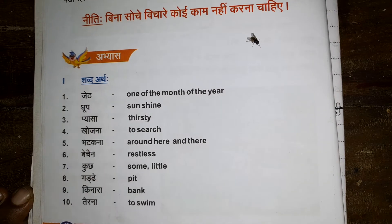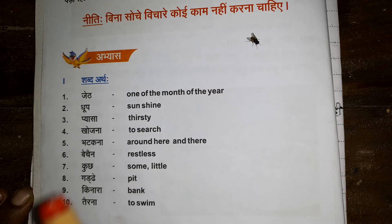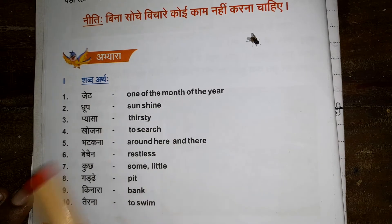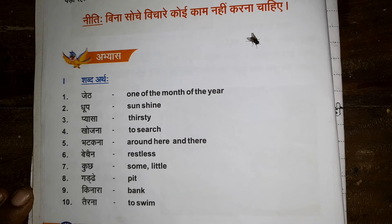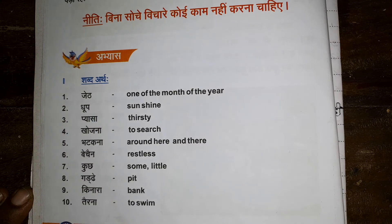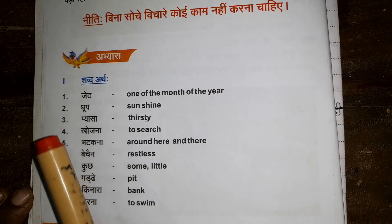Now, the first word: Jet. How do you read this? Jet. It is one of the Tamil months. The previous month was Ani, and this month is Adi. So, Jet means one of the months in Tamil.